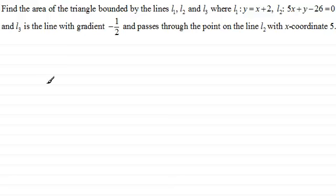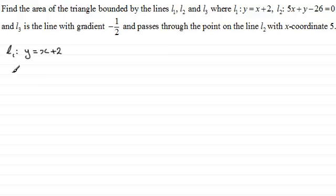First of all, what we've got to do is establish the three vertices for our triangle. So I'm going to put down the equation of our lines first of all. We're going to need to solve some simultaneous equations here. We've got line L1 has y equals x plus 2 as its equation, and if we're to try and find the point of intersection between L1 and L2, then we're going to need to solve these two equations simultaneously. I'm going to rearrange L2 and make y the subject. So by adding 26 and subtracting 5x from both sides, y would equal 26 minus 5x. So we've got our two equations here, equation 1 and equation 2.